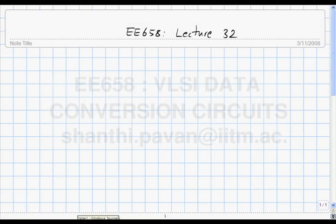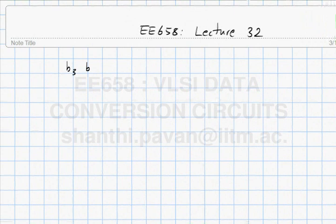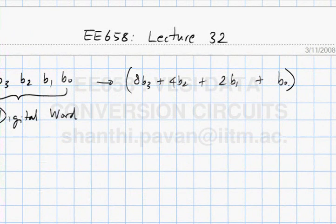This is E658, Lecture 32. We continue along in our study of D2A conversion. Fundamentally, given a digital word — say, for a 3-bit case, B3, B2, B1, B0 — I need to produce an analog output which is related to this. The analog output should be B0 plus twice B1 plus 4 times B2 plus 8 times B3, times some analog quantity. This could be a current, a voltage, or charge. Without loss of generality, I will assume that the output of the DAC is a current.